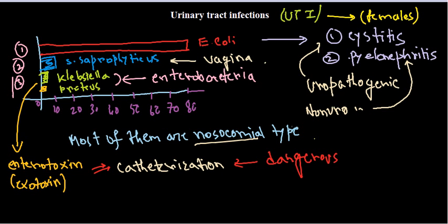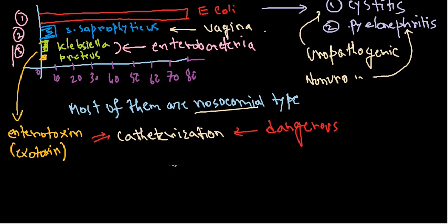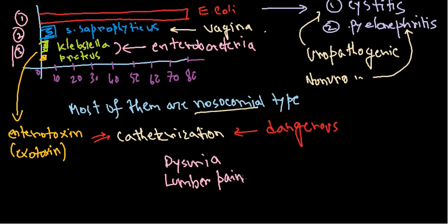Most urinary tract infections result in a common set of complaints: dysuria, lumbar pain, and fever with chills. These are the typical symptoms seen across most cases of urinary tract infections.